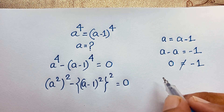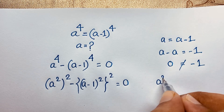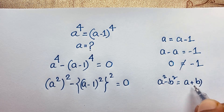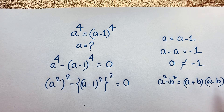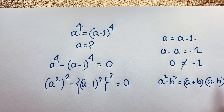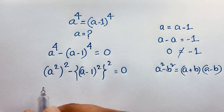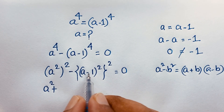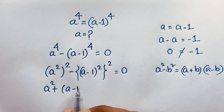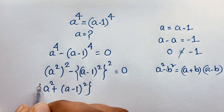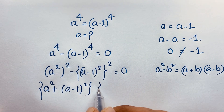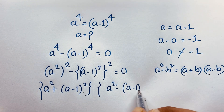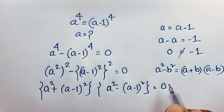Now at this moment you can see here we have a square minus b square form. If I apply the identity, it will be a plus b times a minus b. So here a squared plus a minus 1 whole squared, times a squared minus a minus 1 whole squared, is equal to 0.